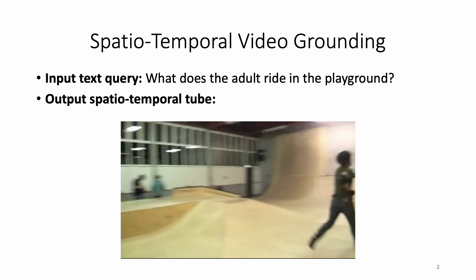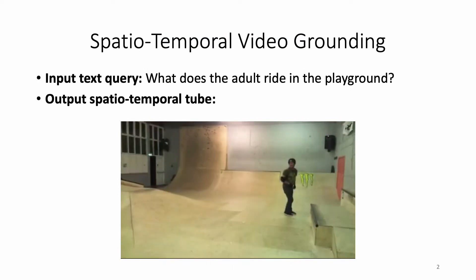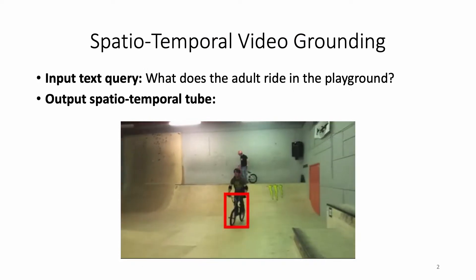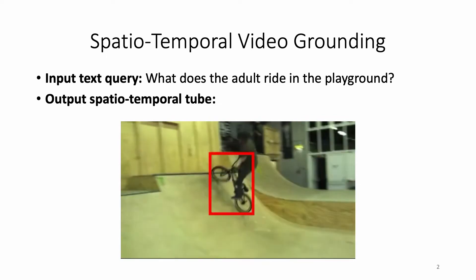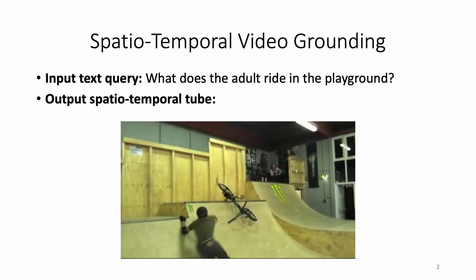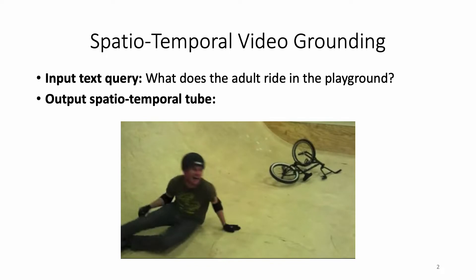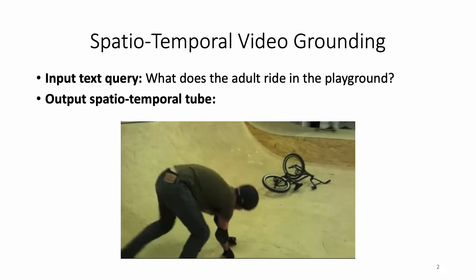Spatial-temporal video grounding consists of localizing a spatial-temporal tube in an untrimmed video corresponding to a given text query. Thus, it requires jointly and efficiently reasoning about time, space, and language.